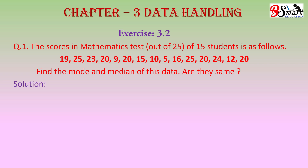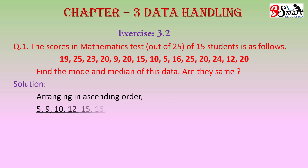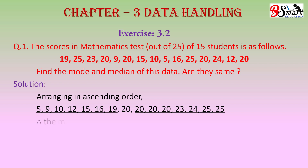Now look at the solution. Arranging the given observations in ascending order, we have this data. We see that 20 occurs the maximum number of times — 4 times. Therefore, the mode of the given data is 20.